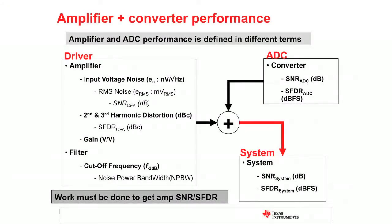In an amplifier, the noise is specified as input voltage noise and input current noise in nanovolts per root hertz. We have to do some work to convert this to dB so we can add it to the SNR of the ADC. The SFDR, however, is a little easier.